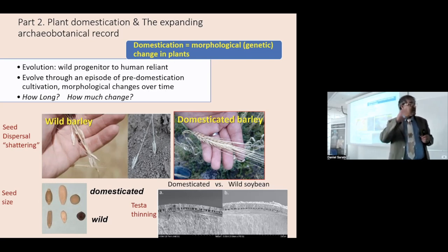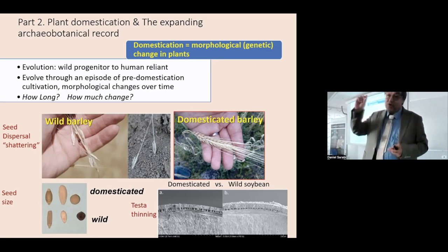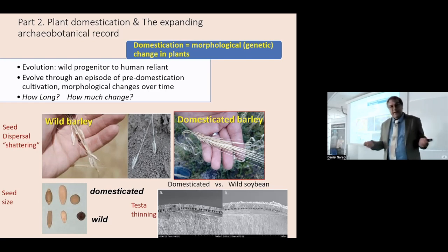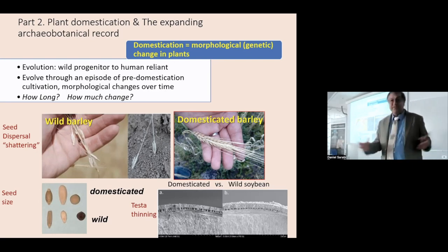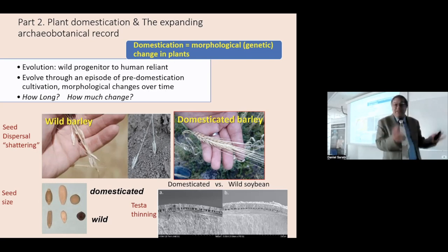We also know from modern studies that there are physical changes related to dormancy. A wild pea is black and has a thick ornamented seed coat that doesn't allow water to penetrate the seed, so it doesn't allow germination. Wild peas will sit in the soil for five, ten, fifteen years before they germinate. The domesticated one has a thin, permeable seed coat and will germinate as soon as it gets wet. This comes about through a thinning of the seed coat, which allows permeability. Some SEMs through a section of soybeans show a domesticated versus wild comparison — the outer seed coat of the wild soybean is very thick, while it's much thinner in the domesticate.